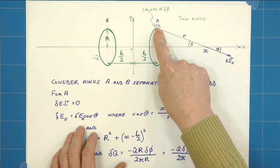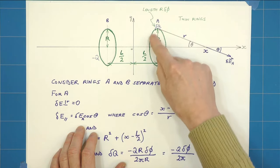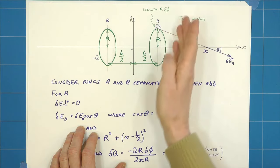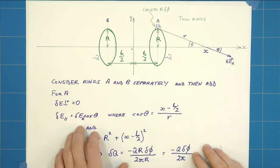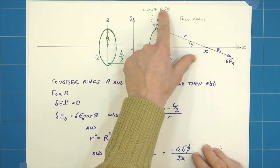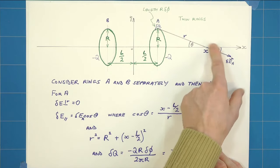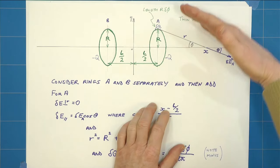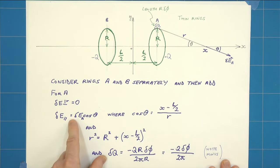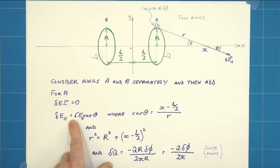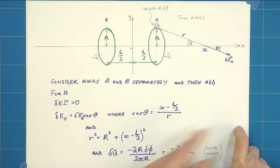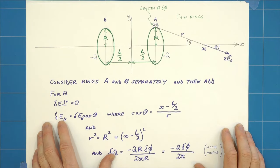Which will mean that the length delta l is going to be r delta phi. I'm just considering some phi as I go around the ring. I've got a charge delta q over a length r delta phi at some distance r from a point x at some angle theta.